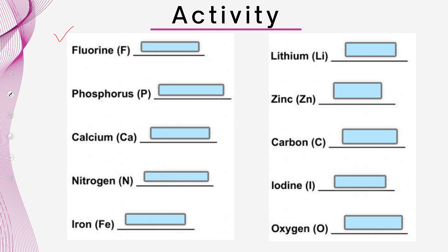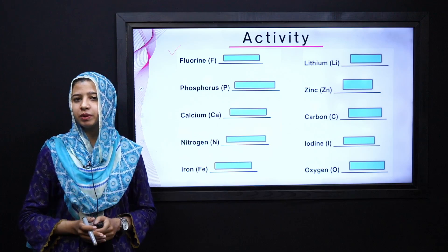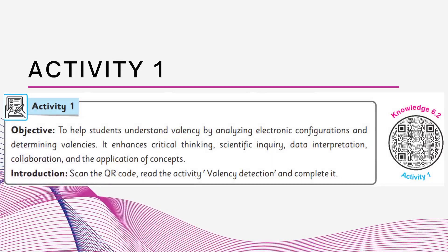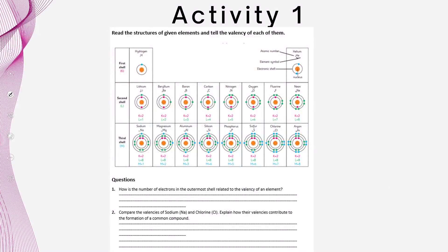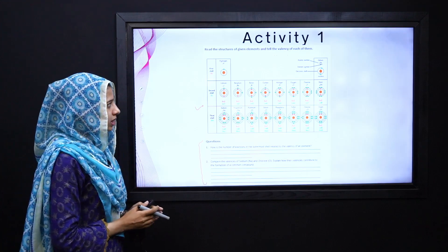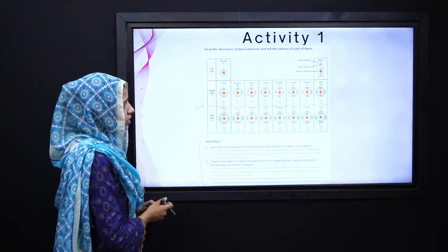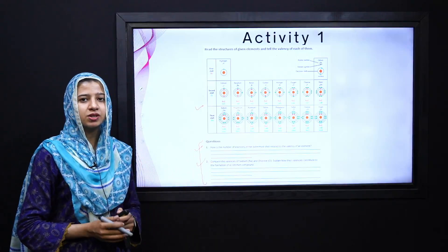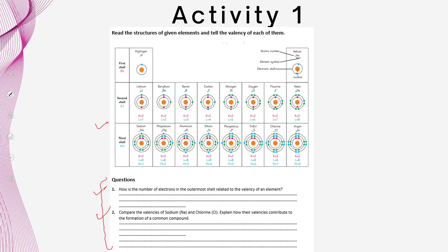Toh apne video ko kuch dair ke liye pause kijiye aur is activity ko solve kijiye. In elements ke atomic number ko find out karne ke liye aap periodic table ki madad le sakte hain. Now here is the activity — you can easily open this activity by scanning the QR code pasted beside it. Iske andar periodic table mojud hai jiske andar atomic structures aur shells given hain, aur neeche do questions hain. Tell the valency and answer the following questions using the given structures. Pause your video for a few seconds and quickly solve this activity sheet.